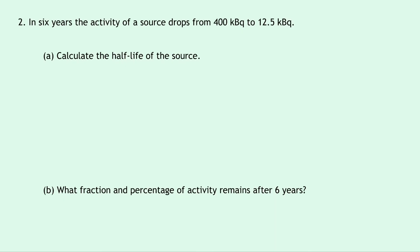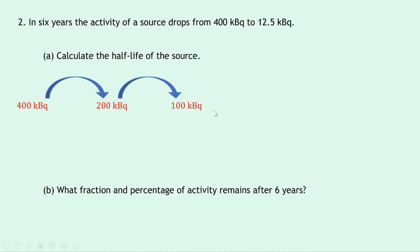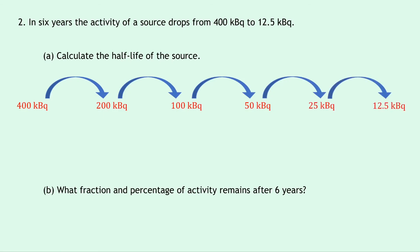Question 2 says that in 6 years the activity of a source drops from 400 becquerels to 12.5 becquerels. Part A: calculate the half-life of the source. We halve 400 → 200 → 100 → 50 → 25 → 12.5 becquerels, giving us 5 half-lives in 6 years. So 5 half-lives equals 6 years, meaning 1 half-life equals 6 ÷ 5 = 1.2 years.